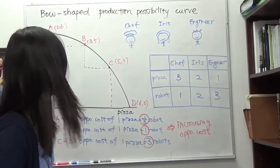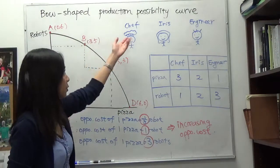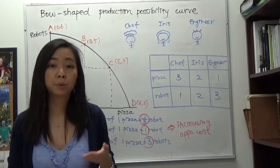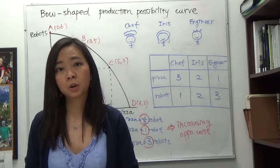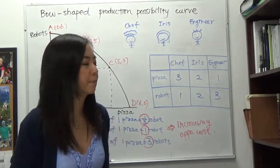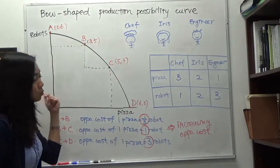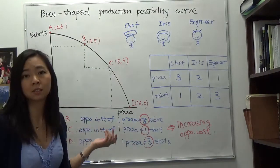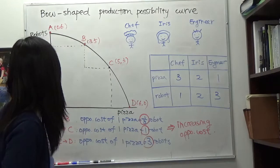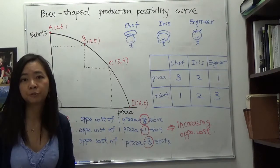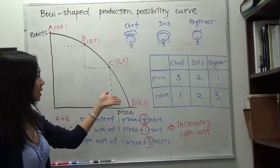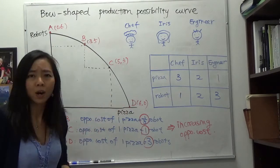We know that the production possibility curve shows how much an economy can produce given the current technology and using all the resources — the maximum amount of goods and services this economy can produce. You'll notice that the production possibility curve is typically bow shaped; it is not a straight line. Why is that?